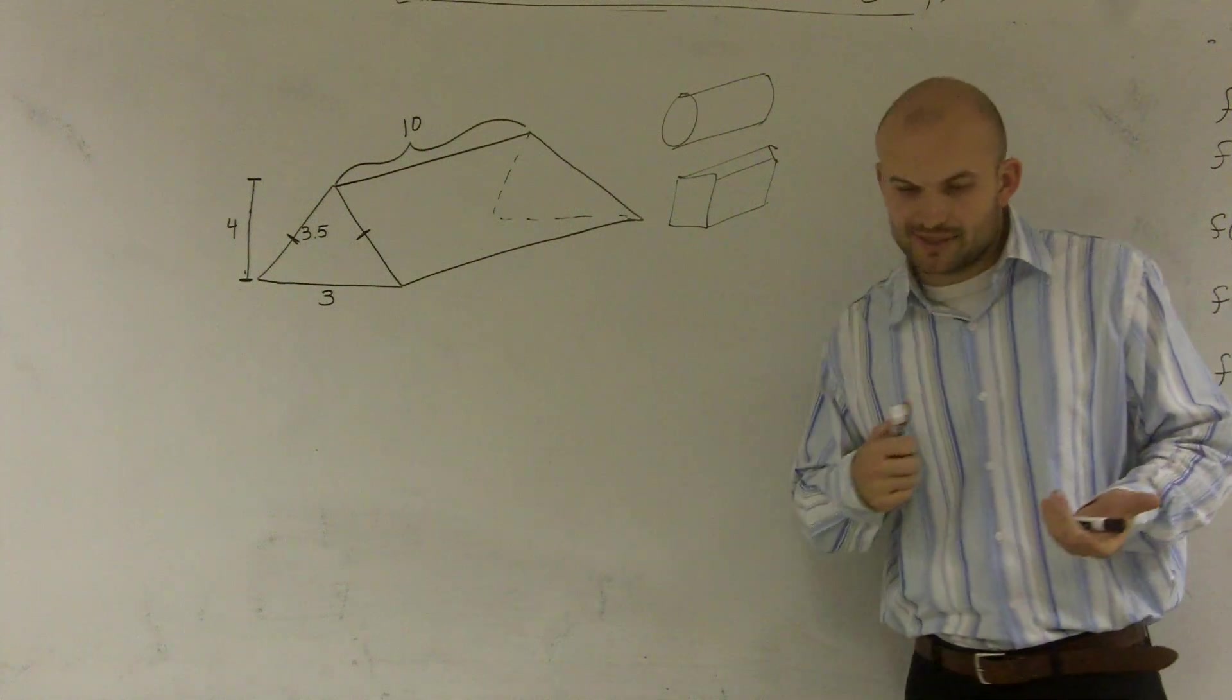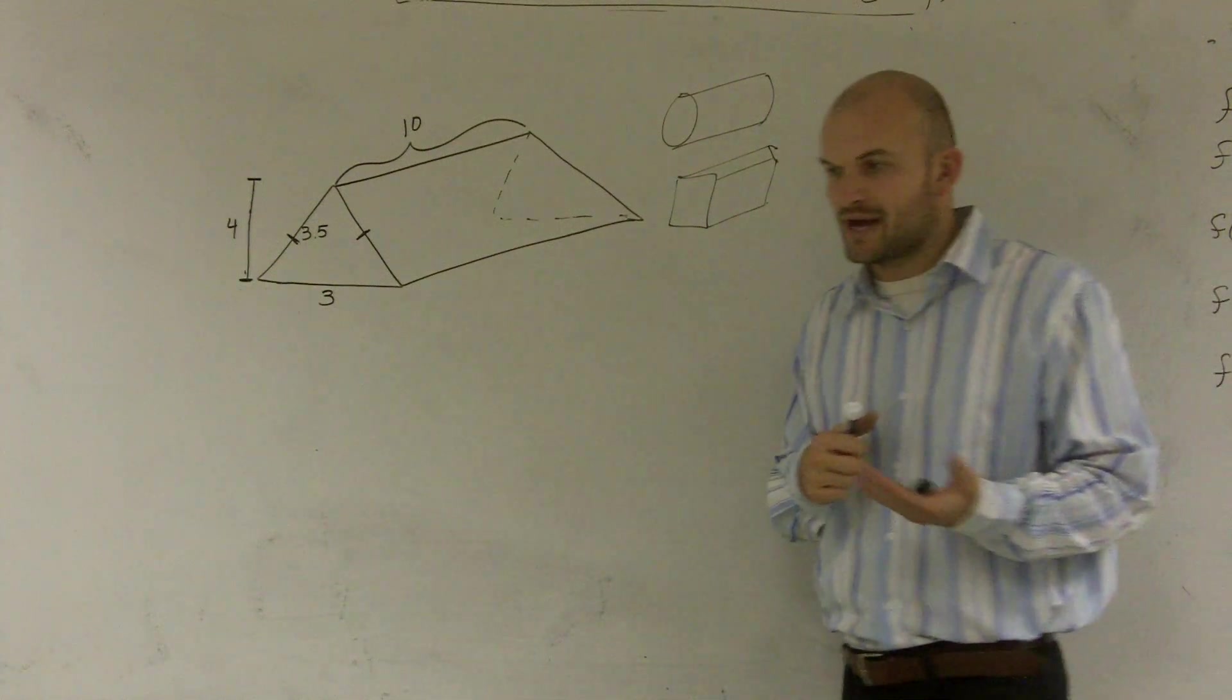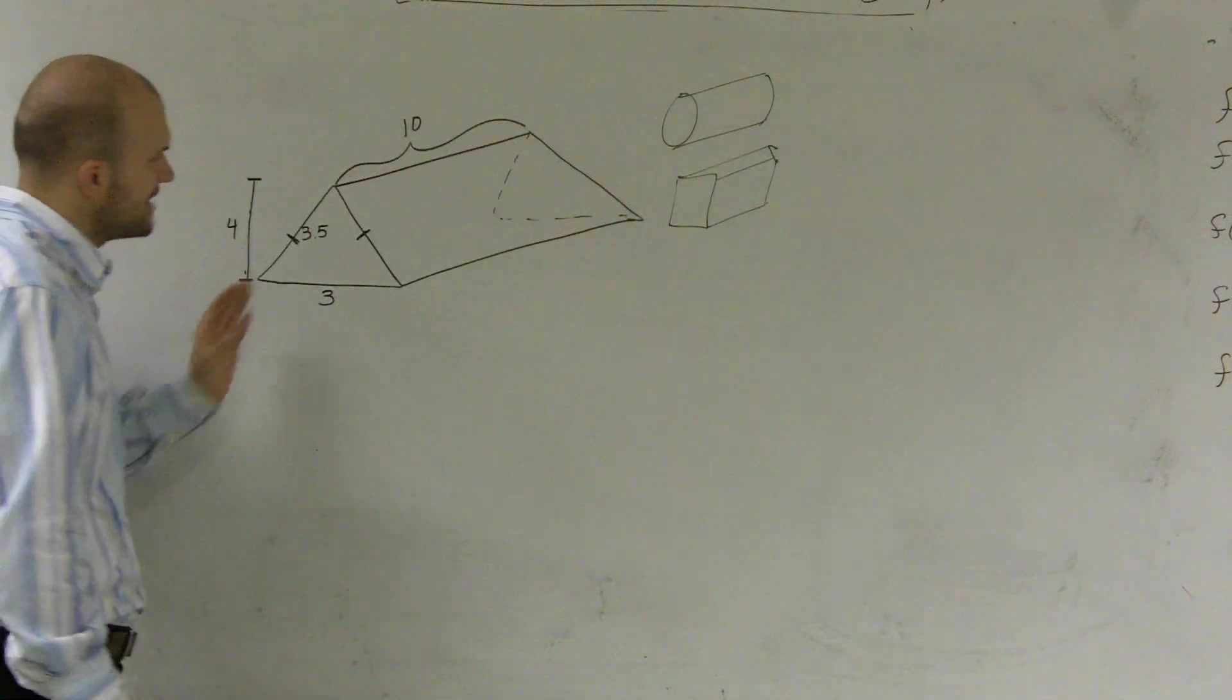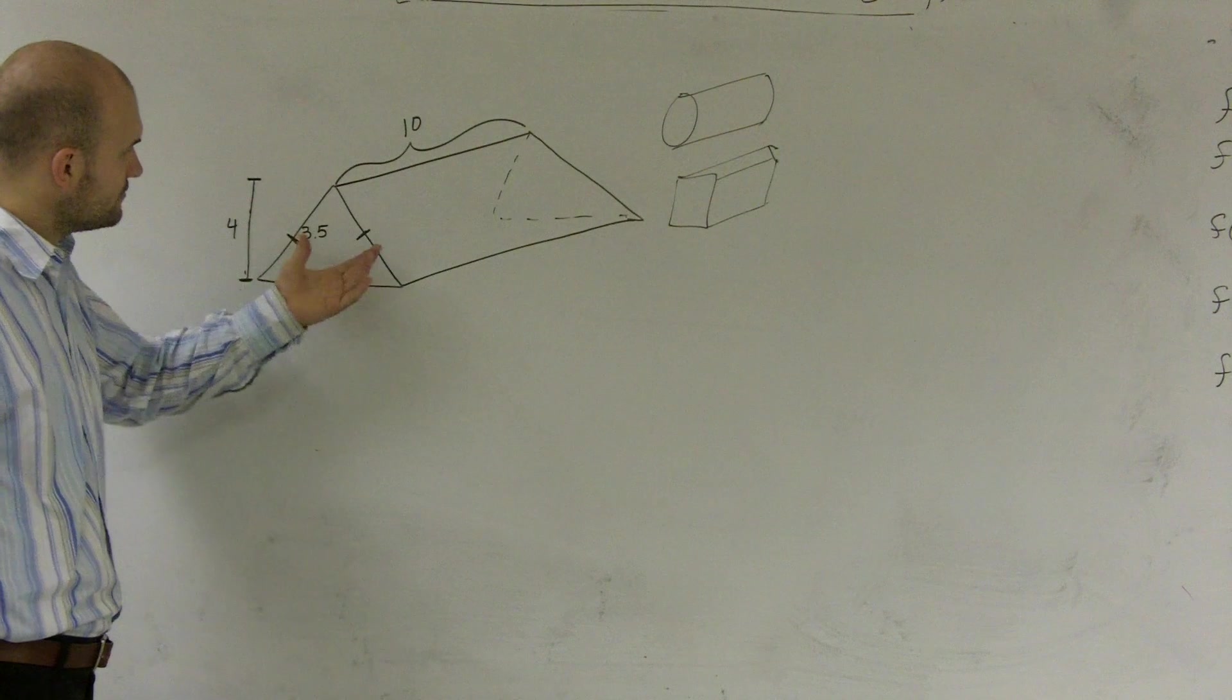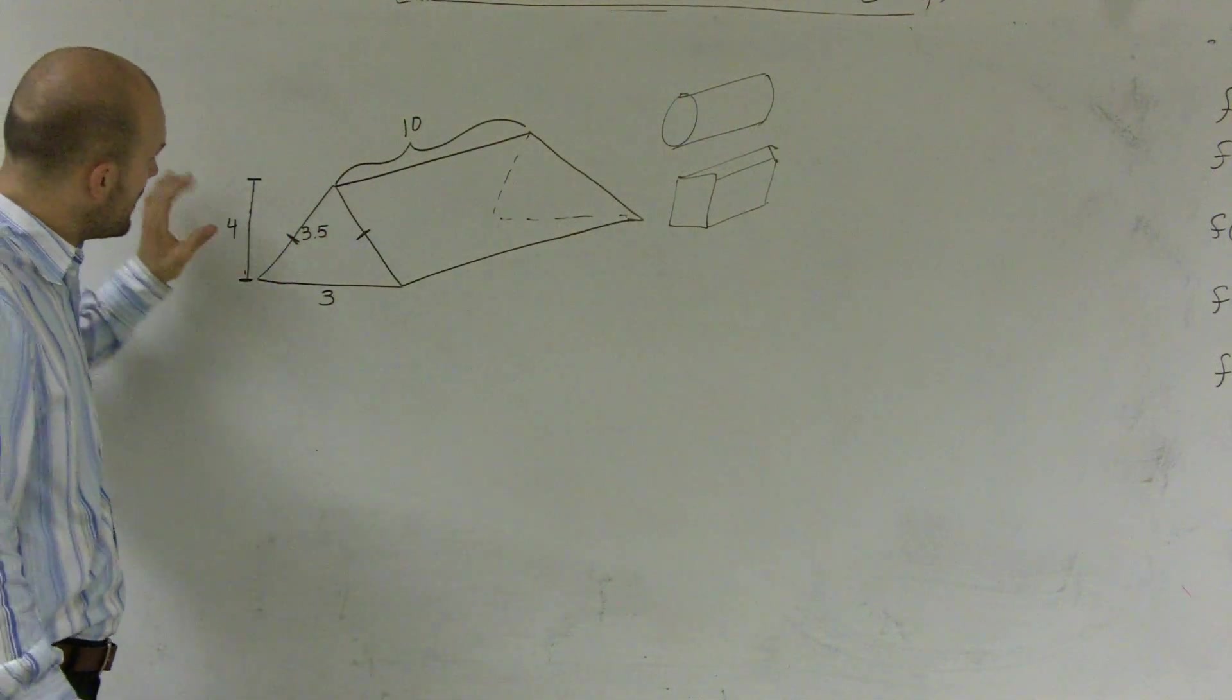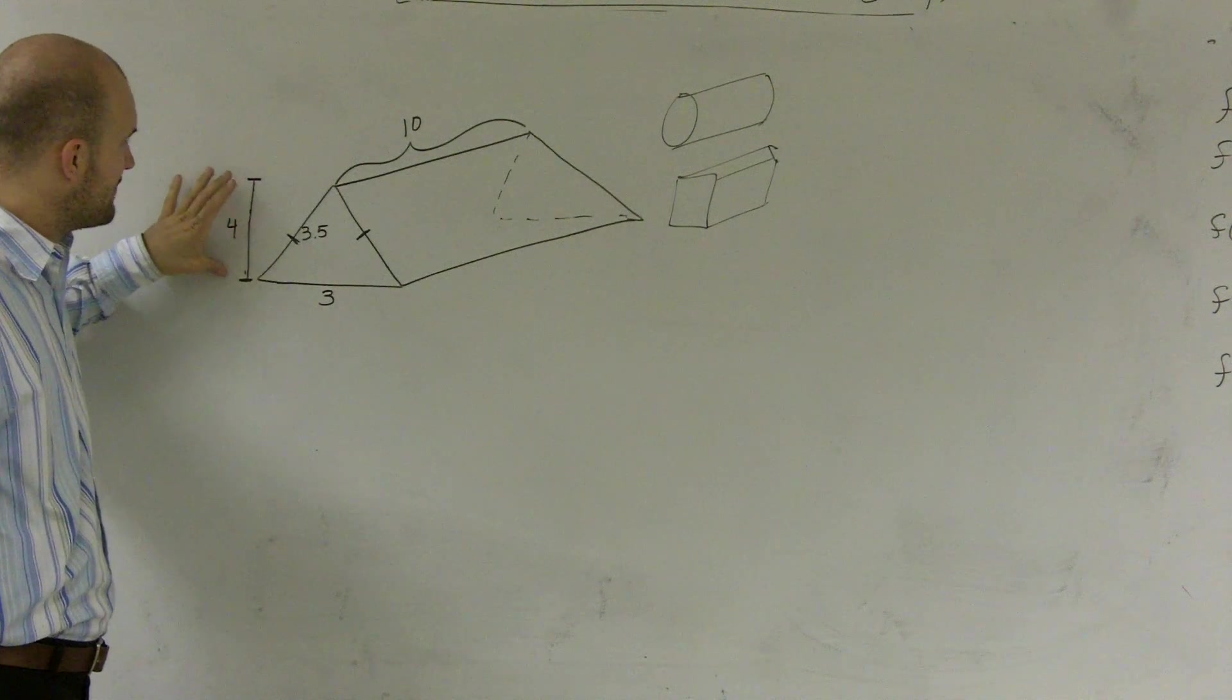However, when we have a triangle that is not a right triangle, here we have an isosceles triangle, I do not have the right angle. But what I do have is a height.